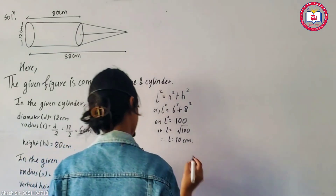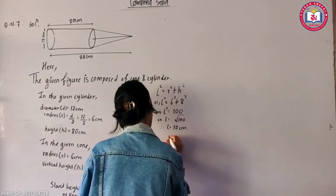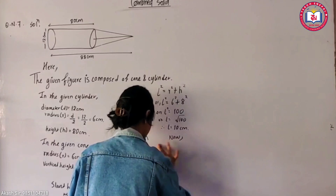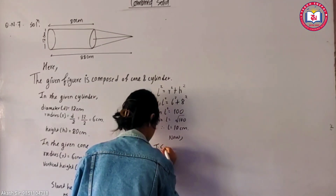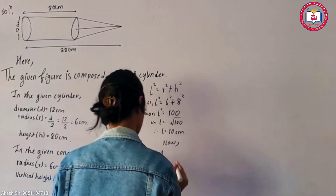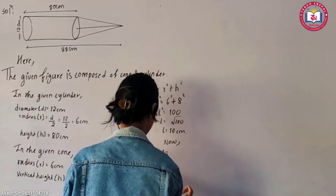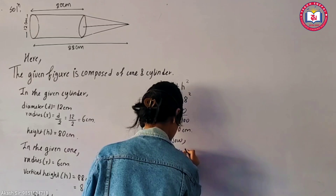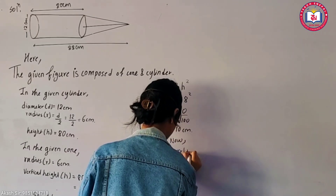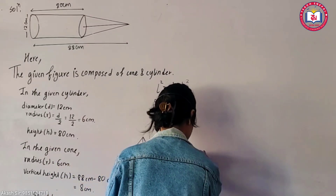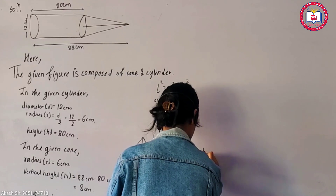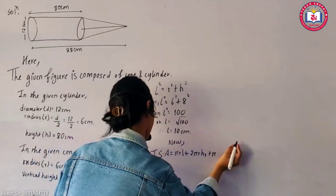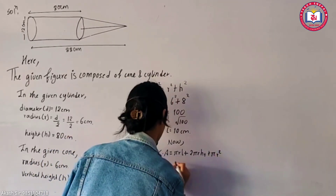Looking at the lateral side, this is the data figure showing the CSA of the base area. The CSA of the cone is π r l. The cylinder CSA is 2π r h1. The area of the base is π r squared.